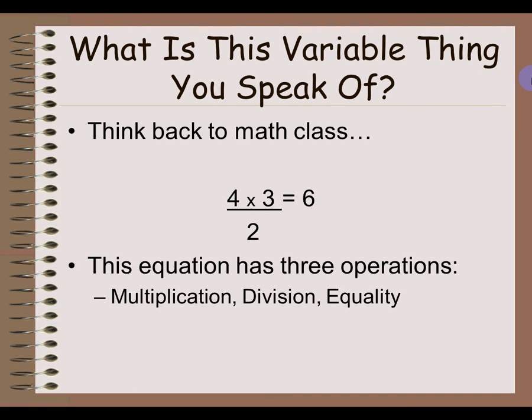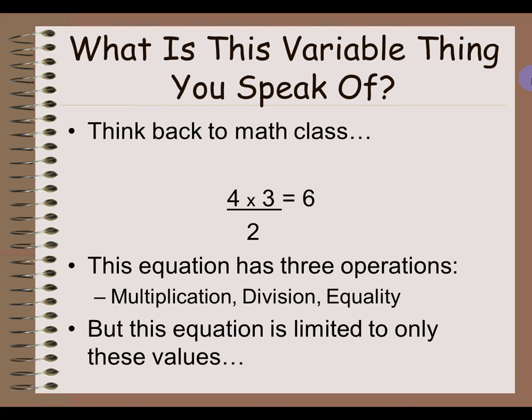Let's look at an equation. In this particular equation we have three operations: multiplication, where we do 4 times 3; division, where we're dividing by 2; and equality, where we're showing that the left-hand side of the equation is in fact equal to the right-hand side of the equation. Unfortunately, it's not overly useful because it's limited to only calculating for the specific numbers we've put in this equation.